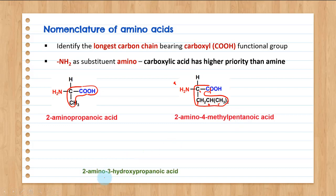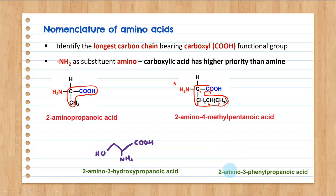The next structure is 2-amino-3-hydroxypropanoic acid: a three-carbon carboxylic acid with amino at carbon two and hydroxy at carbon three. The following structure is 2-amino-3-phenylpropanoic acid: three carbons in the main parent chain, NH2 at carbon two, and a benzene substituent (named phenyl) at carbon three. So the name is 2-amino-3-phenylpropanoic acid.